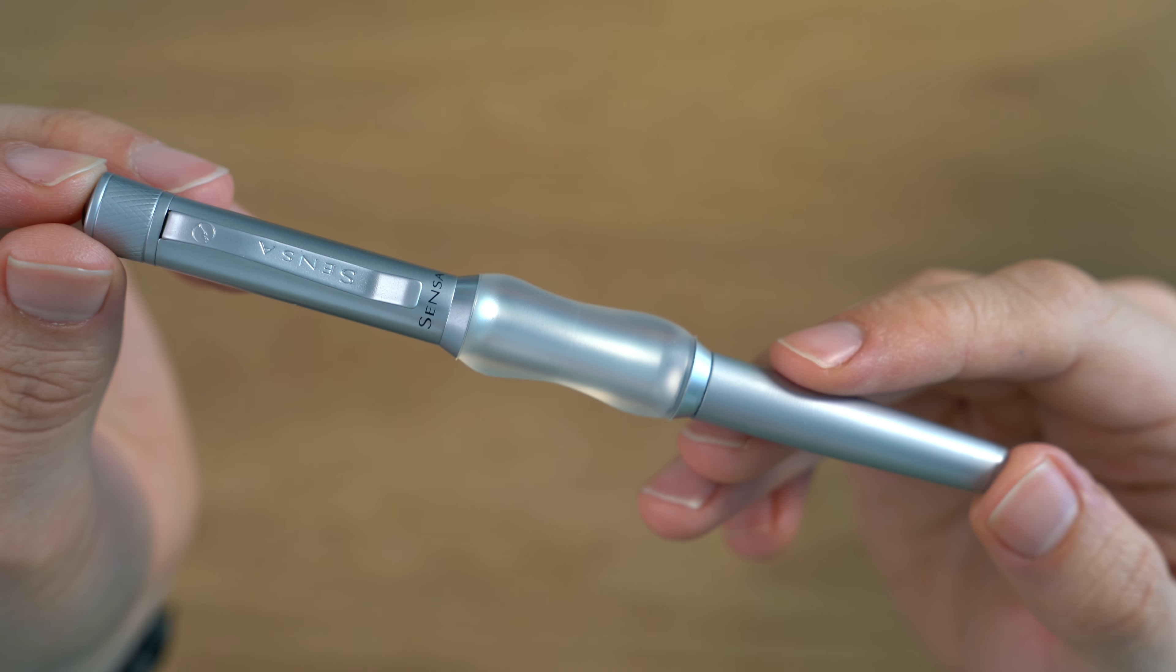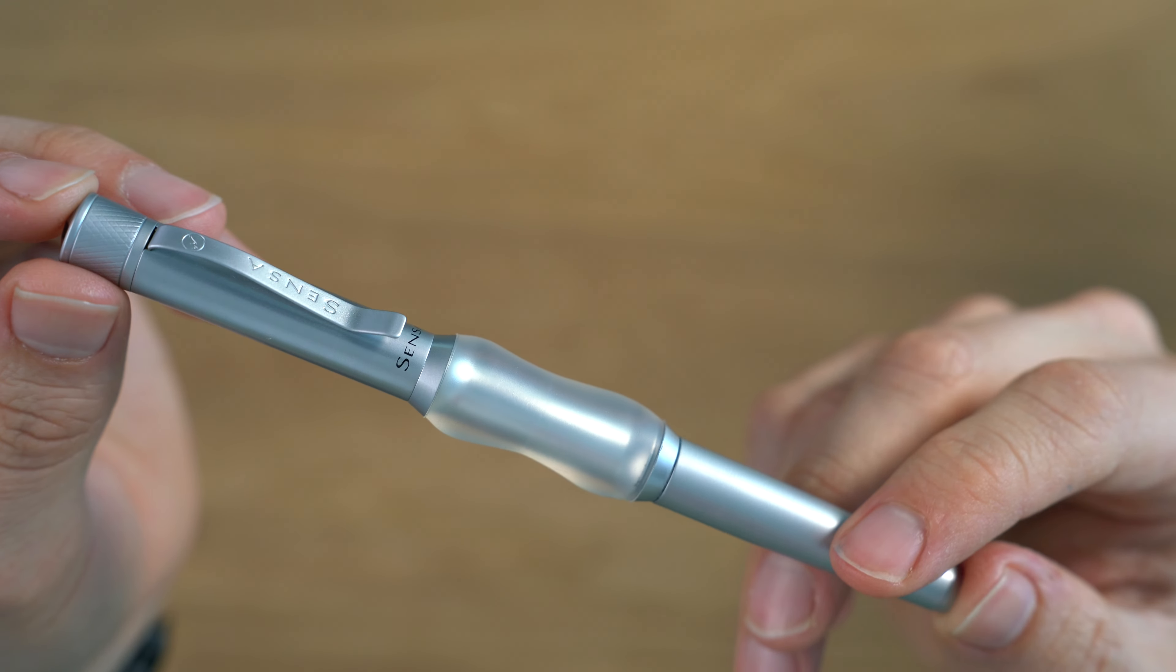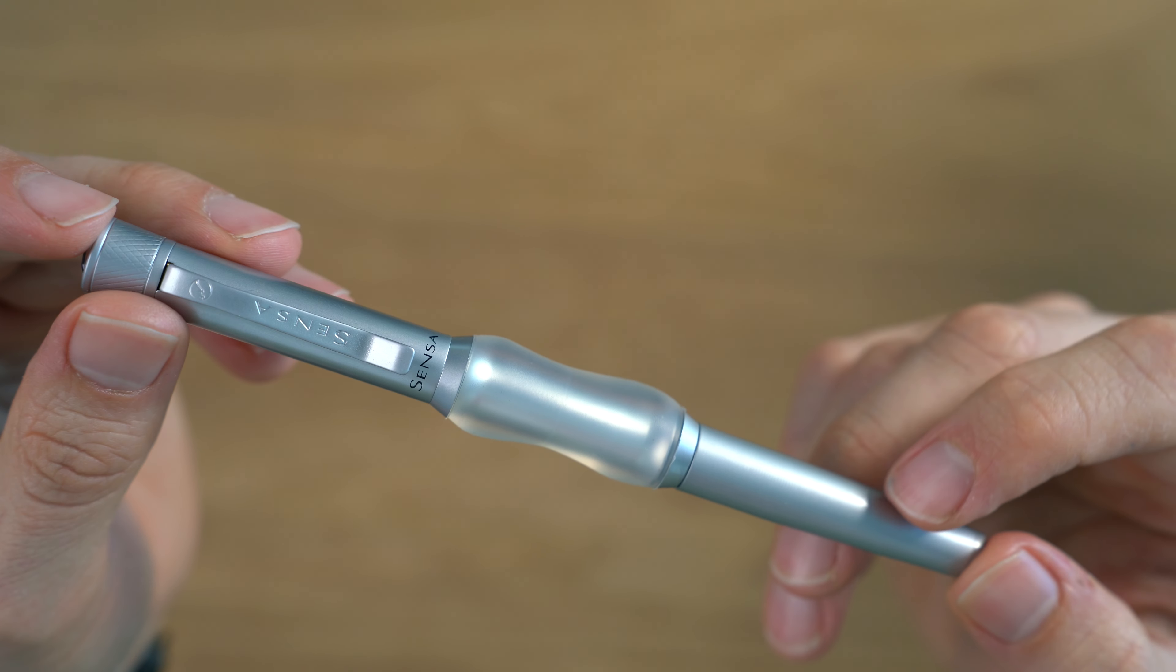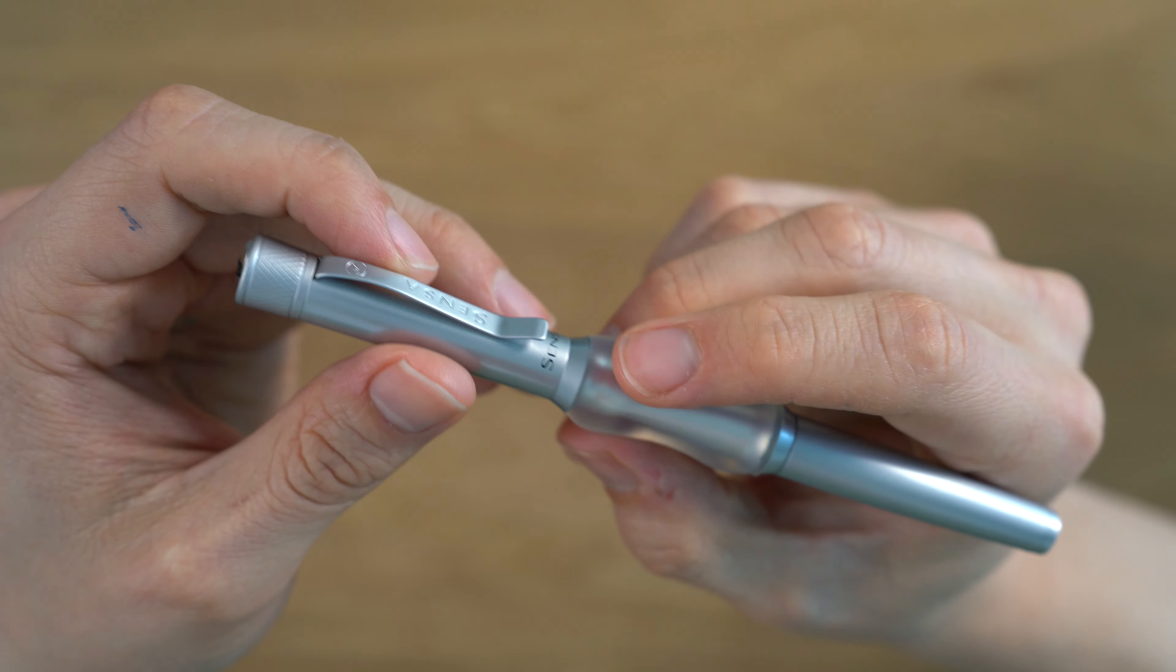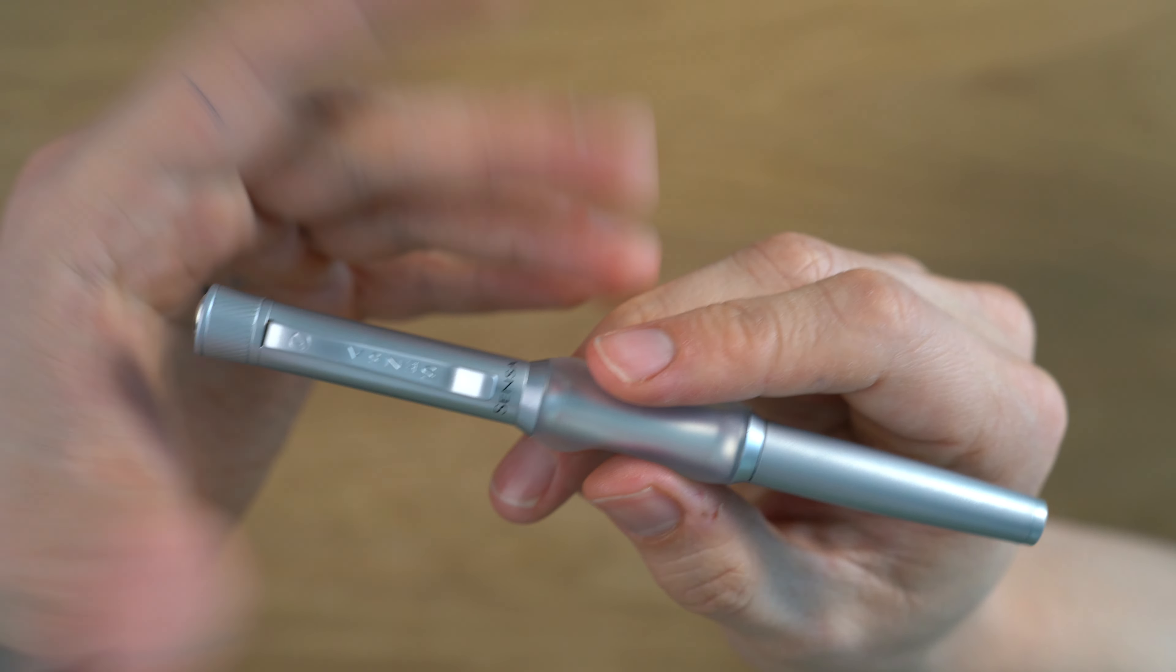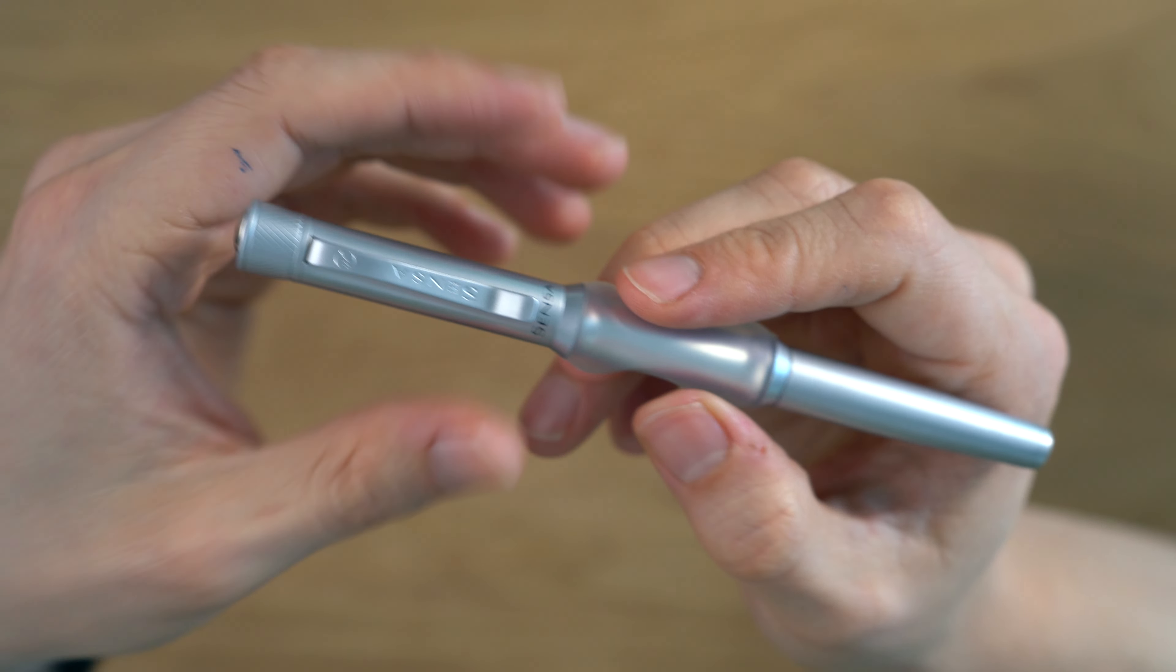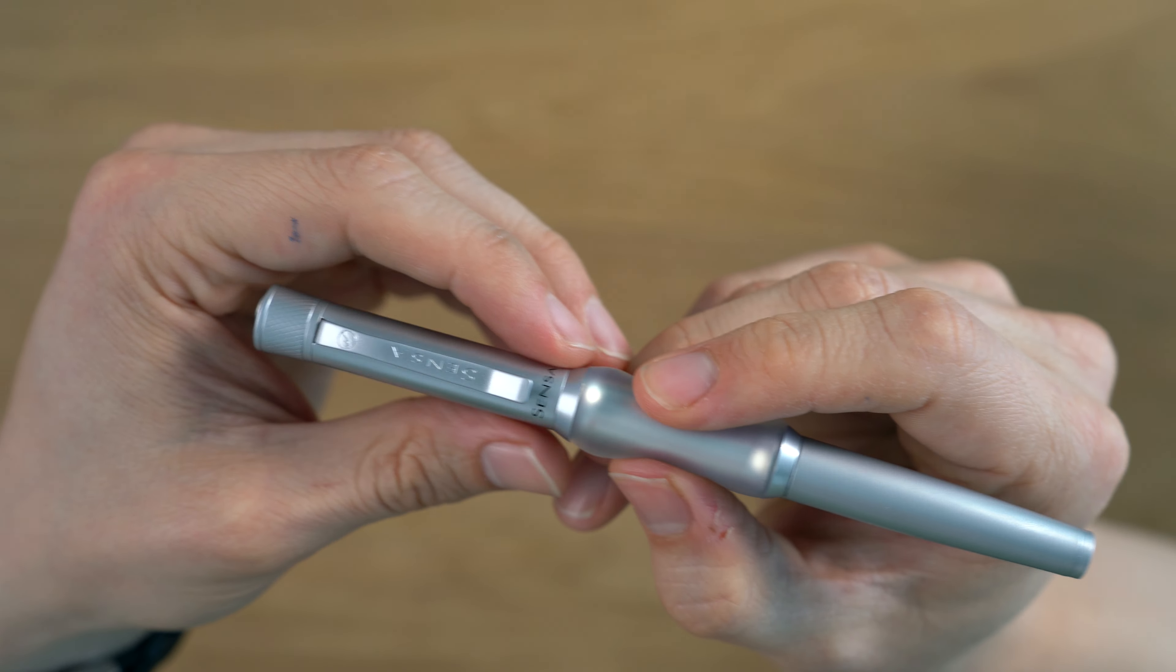So this is the Sensa Metals Collection Satin Silver Fountain Pen. Sensa is a brand that I have not seen for quite a long time. When I was a kid, my local stationery store carried these pens. When I went there, I liked playing with them. They were not in my price range, and they were ballpoints, so I wasn't as interested. But anyway, I saw this pen on sale. It was a fountain pen. I said, okay, let's do it.